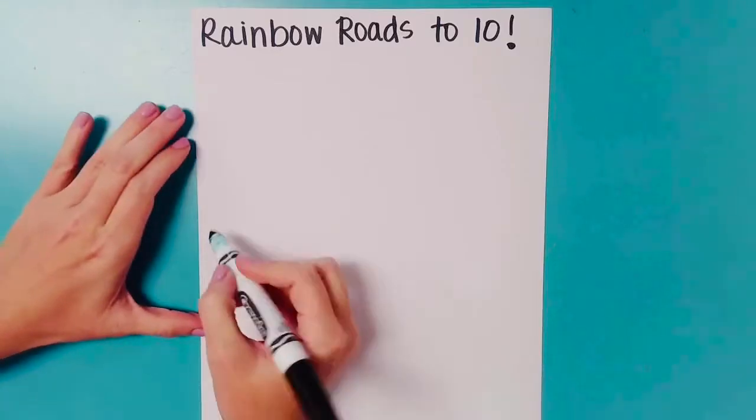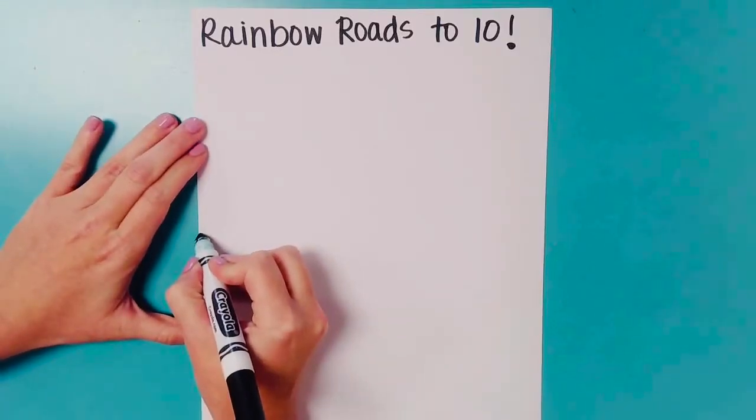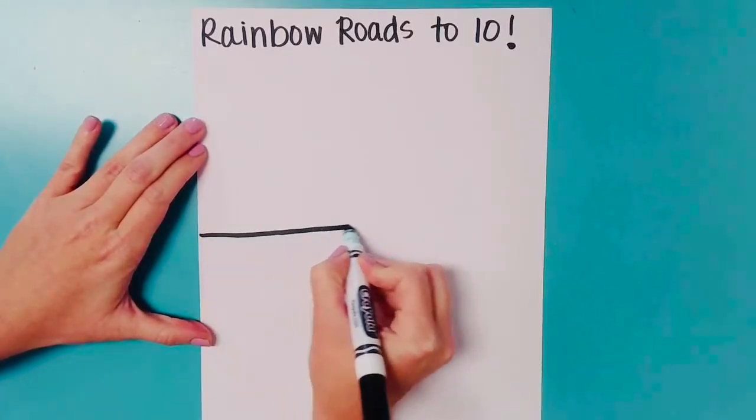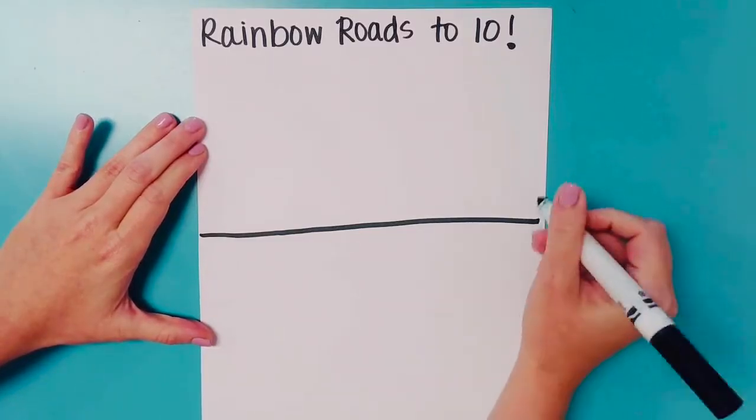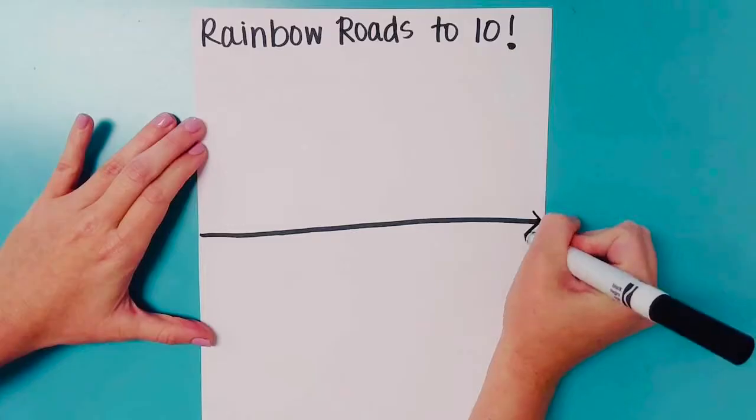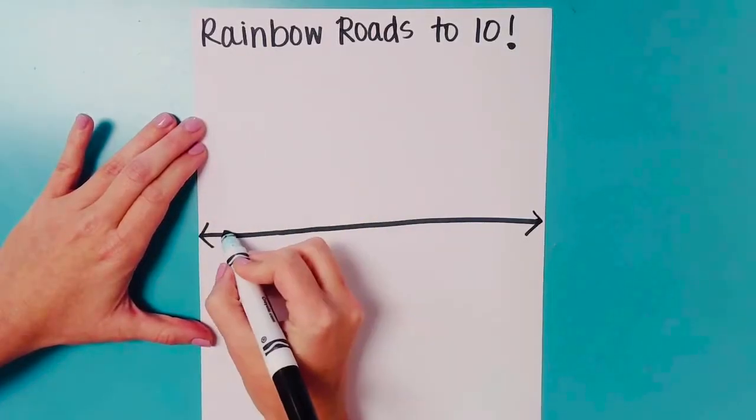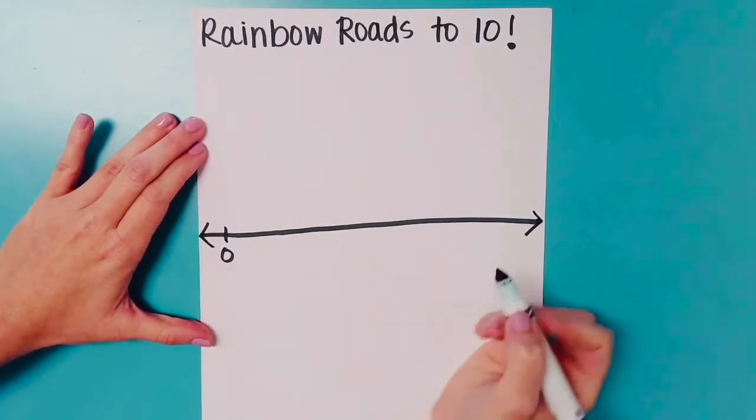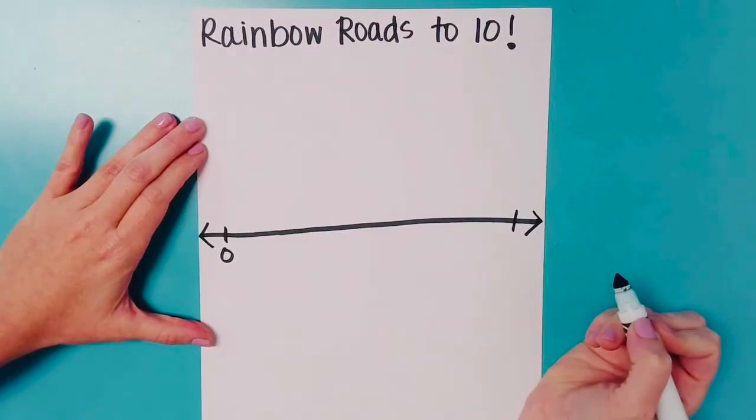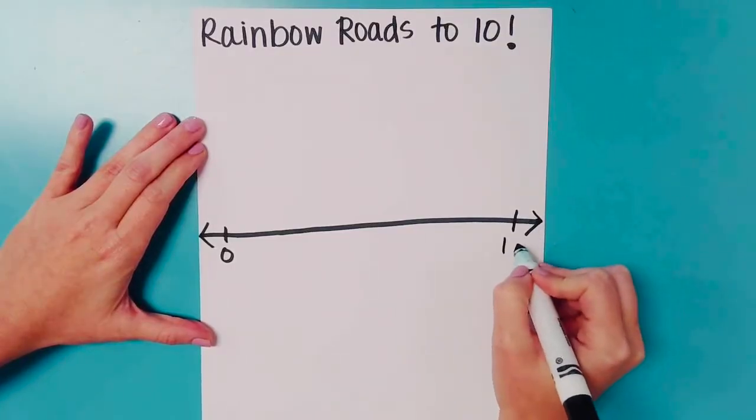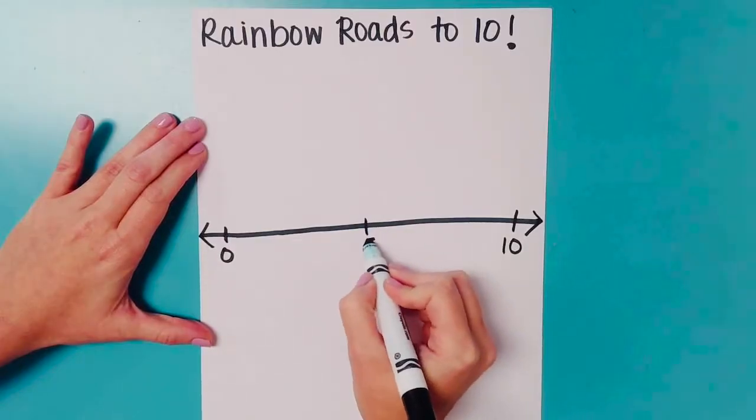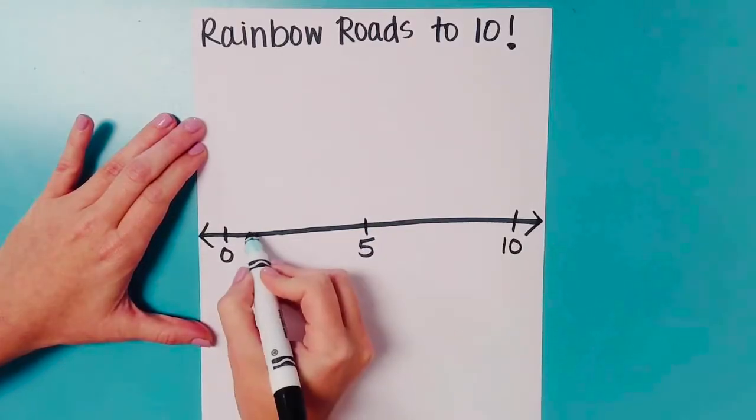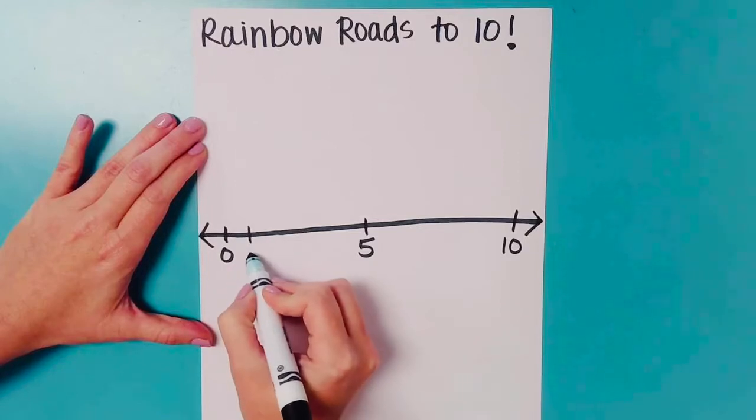I'm going to start by drawing a straight line in the middle of my page, or as straight as I can. Mine's not perfect, maybe yours will be, maybe it won't. And our number line is going to start with 0, and go all the way to 10. You can put 5 in the middle, and then fill in the numbers after 0.